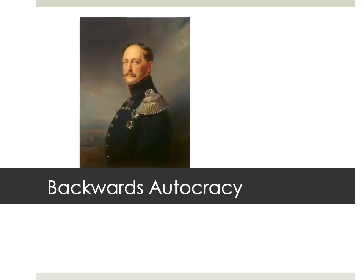Russia in the 19th century, before most of the events that we're going to talk about, was probably best defined by the phrase 'backwards autocracy.' Autocracy being absolute and direct rule by a single person, usually a monarch, which was the case in Russia, ruled by the czars, the emperors. Tsar Nicholas I, who ruled from 1825 to 1855, was in many ways the personification, the perfect example of Russian autocracy at its finest. He was a very ultra-conservative, very repressive czar who didn't really tolerate any dissent or questioning of his hereditary and divine right to rule.